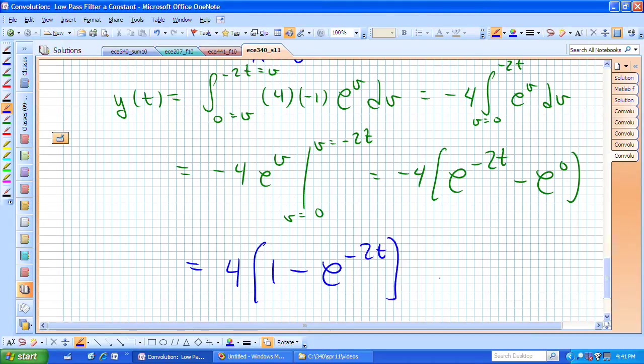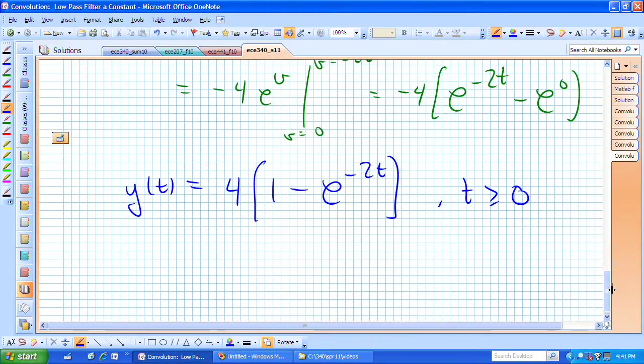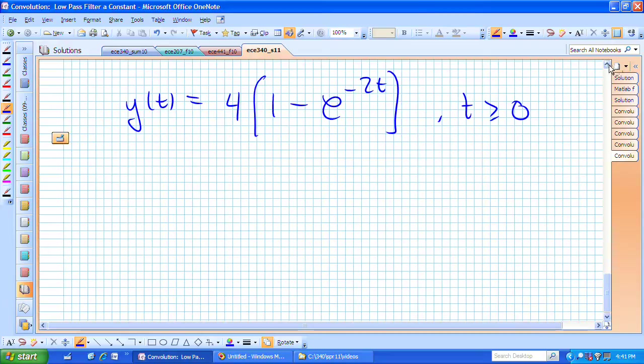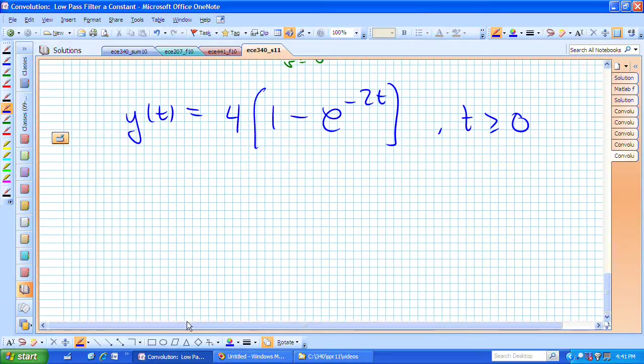e to the 0 is 1. Let me multiply that negative sign through. I now have 4 times 1 minus e to the minus 2 t, and that's what my output y of t is for t greater than or equal to 0.